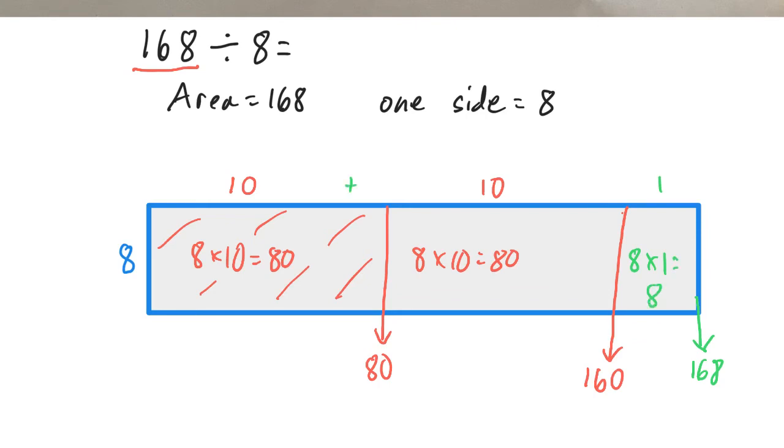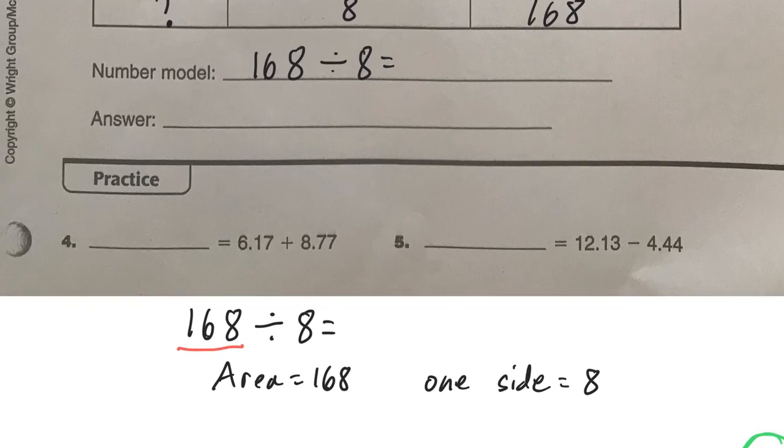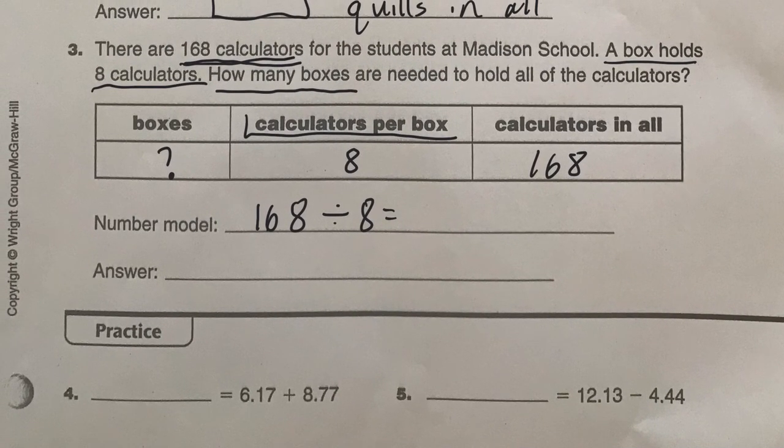So 10 plus 10 plus 1 is going to give us 21. And that is our answer. But don't forget to put the unit there as well. So the answer is 21. But what does 21 mean? Well, that's your unit, boxes, to hold the calculators.